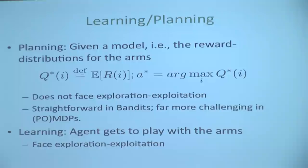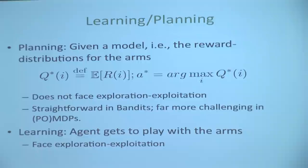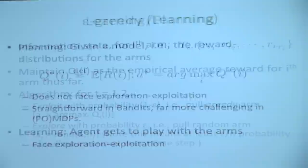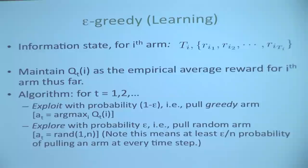You just pull an arm and get a random reward from whatever distribution is associated with that arm. So let's look at the most obvious learning algorithm: Epsilon-Greedy Exploration. We're going to do exploration-exploitation. We can't simply exploit — if I pull the first arm and it gives a positive reward, I'll keep pulling only that arm. So I do a little bit of exploration. Epsilon-Greedy: explore with probability epsilon, exploit with probability 1 minus epsilon.